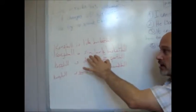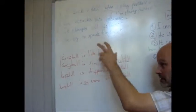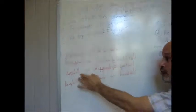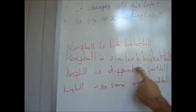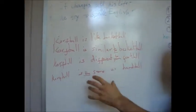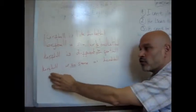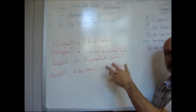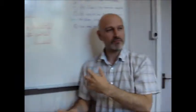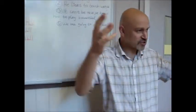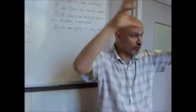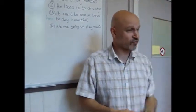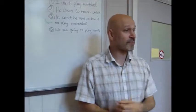Golf ball is similar to basketball. Golf ball is like basketball. Golf ball is different from football. Some people say 'different to,' and that's okay. And remember, golf ball is the same as a marble. Remember the different prepositions that need to go around the descriptive words when we are comparing.